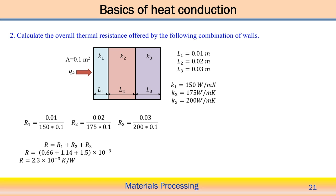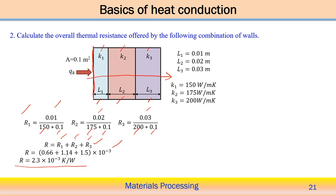For the second example, calculate the overall thermal resistance for a combination of three walls with different thermal conductivities and thicknesses. The cross-section area is 0.1 m². R1 = L1/(K1·A), R2 = L2/(K2·A), R3 = L3/(K3·A). Since they are serially connected, total resistance R = R1 + R2 + R3. By understanding the heat flow direction, we determine whether resistances are in series or parallel. The total thermal resistance is calculated as 2.3×10⁻³ K/W.